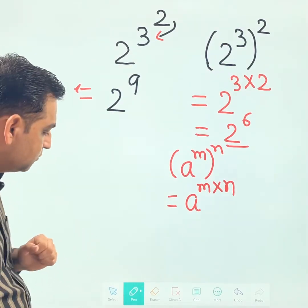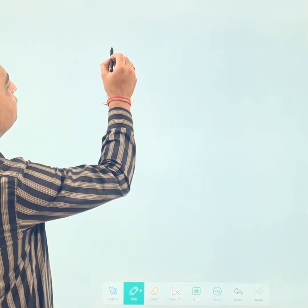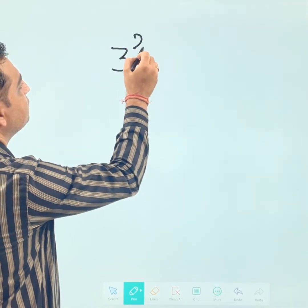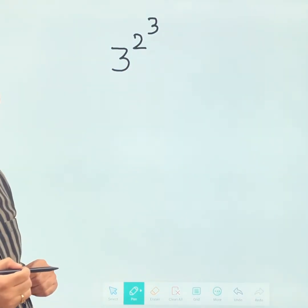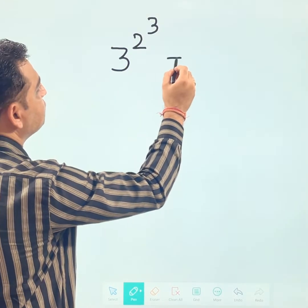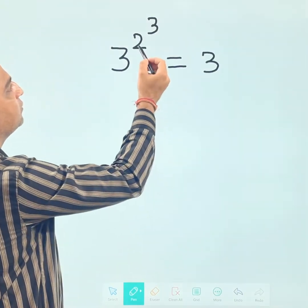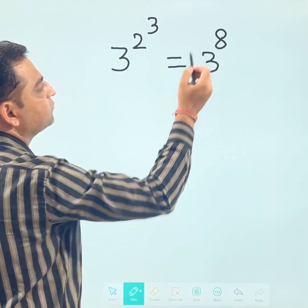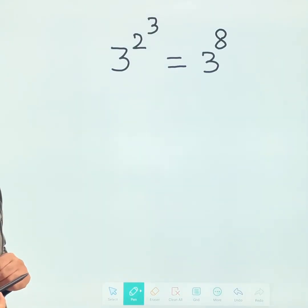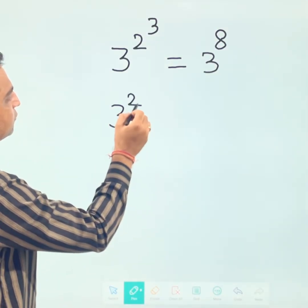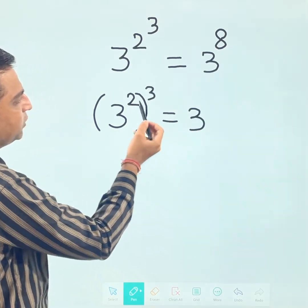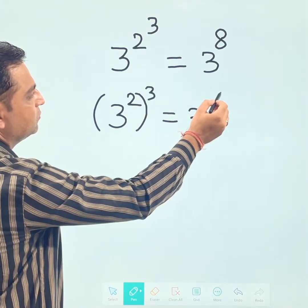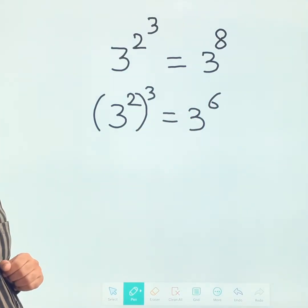Let me use one more question for clarity. Suppose we have 3 to the power 2 then to the power 3, without brackets. The answer here: 2 cubed is 8, so this becomes 3 to the power 8. Whereas if we have (3 squared) cubed — with brackets — you multiply 3 and 2, giving 3 to the power 6.